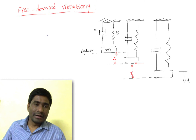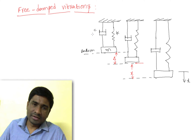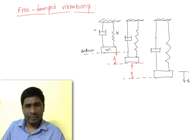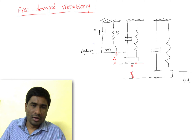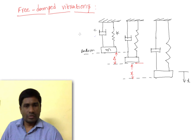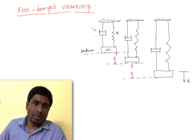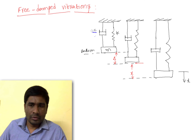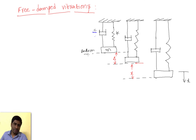Next we will take up damping. In the previous session we considered the spring-mass system where damping is absent, but in this case we will consider damping. When we consider damping, the vibration will reduce. How it affects, how it reduces, and the amount of damping — which also influences the final vibration and its amplitude — we will see all those in this session.